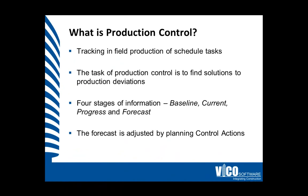So what is production control? Production control is tracking infield production of scheduled tasks. We can then produce production controls to find solutions to production deviations. Essentially there are four parts of information that would feed a forecast: the baseline data, the current data, the progress, and the ultimate forecast trended based on this information. The forecast can be adjusted using control actions, and we're going to learn a lot more about those in the upcoming slides.